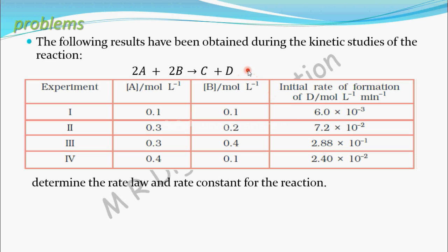Rate of formation of D is equal to rate of the reaction. In experiment 1, concentration of A is 0.1, B is 0.1, and initial rate is 7.2 × 10⁻³. In experiment 2, concentration of A is 0.3 and B is 0.2, and initial rate is 7.2 × 10⁻². He also conducted experiments 3 and 4. From this table, we have to find rate law and rate constant.